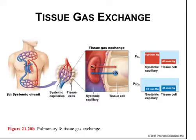Tissue gas exchange, also known as internal respiration, is the exchange of oxygen and CO2 between the blood and the tissues. The partial pressure of oxygen and CO2 is the driving force. Cells use oxygen constantly for respiration, so the partial pressure of oxygen in tissue is low, while the partial pressure of oxygen in systemic capillaries is high — this steep gradient favors the diffusion of oxygen into tissues. Tissues produce large quantities of carbon dioxide as a waste product of cellular respiration, so partial pressure is high in tissue while it's relatively low in the systemic capillaries. CO2's ability to dissolve in water also favors its diffusion from tissue into the systemic capillaries.